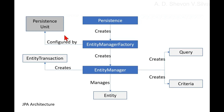The persistence.xml provides information which is necessary for making database connections. The persistence class contains Java static methods to get entity manager factory instances. Since JPA 2.1, you can generate database schemas and/or tables and/or create DDL scripts as determined by the supplied properties.